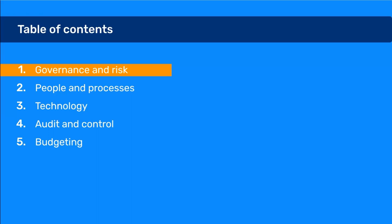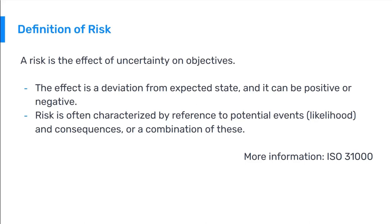First, we'll talk about the definition of risk. A risk is the effect of uncertainty on objectives. The effect is a deviation from the expected state and can be positive or negative. Positive risk is an opportunity and negative risk is a threat. Risk is often characterized by reference to potential events, likelihood, and consequences, or a combination of these.